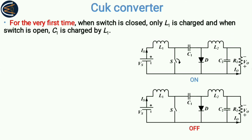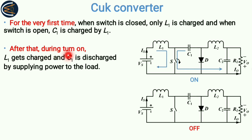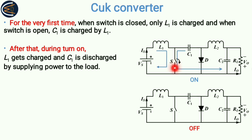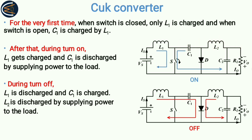After that, during turn-on, when the switch is closed again, L1 gets charged once more. This time C1 is discharged by supplying power to the load. Since voltage polarity across a capacitor cannot change abruptly, C1 maintains the same polarity, discharges via the short-circuited path, and supplies power to the load. During turn-off, L1 is discharged, and C1 is again charged by L1 and the input supply through the diode.